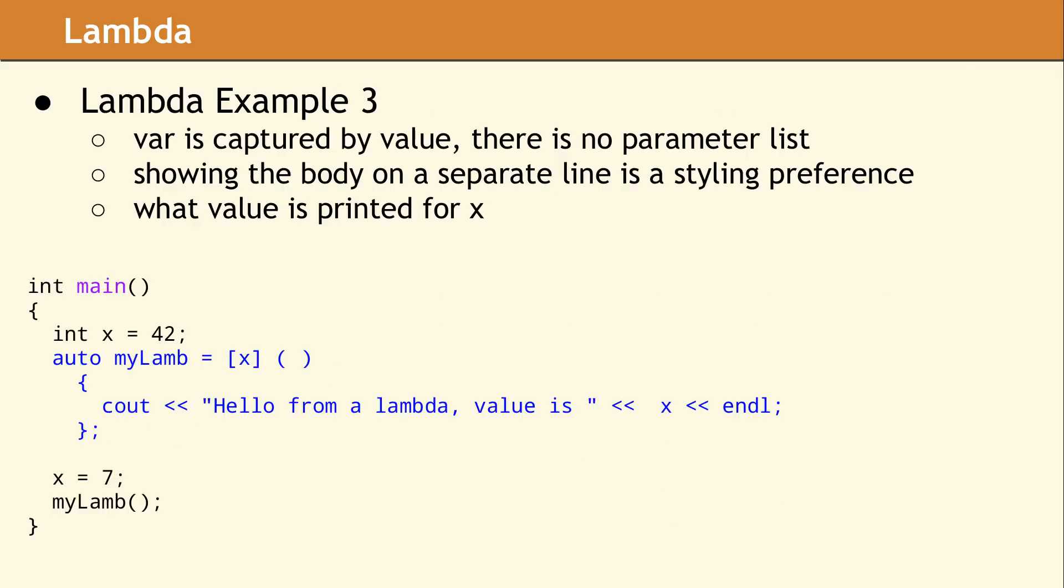Here is a simple example showing a lambda expression which captures x by value and simply prints out the value. The variable x must be declared before the lambda expression. When the lambda is defined, it is assigned to a variable called myLamb. Note that x is then set to a new value of 7. Finally, the lambda is invoked. So the question is, what is the value of x printed in the message? Since the capture happens when the lambda expression is defined, the value becomes part of the expression. Since x is captured by value, it is copied into the expression. What is printed will be 42. It is worth noting that if x had been captured by reference, the printed value for x would be 7.